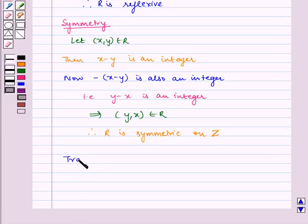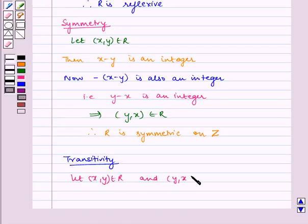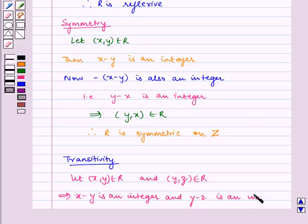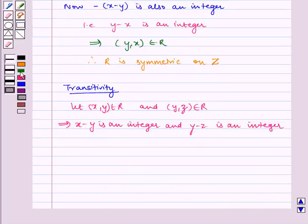For transitivity, let (x,y) belongs to R and (y,z) belongs to R. Which implies x minus y is an integer by our relation defined, and y minus z is an integer, similarly by the relation defined.